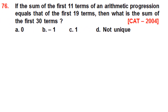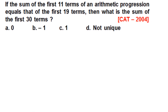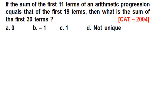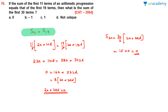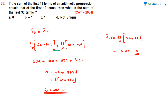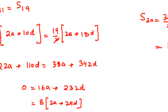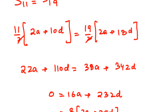Solution to Question 76: It is given that the sum of 11 terms equals the sum of 19 terms. Using the sum formula, sum of 11 terms = (11/2)(2a + 10d) and sum of 19 terms = (19/2)(2a + 18d). Setting these equal and cross-multiplying: 22a + 110d = 38a + 342d.